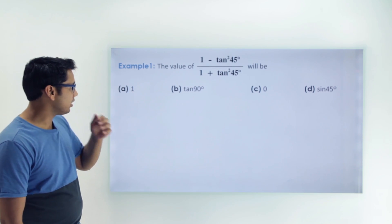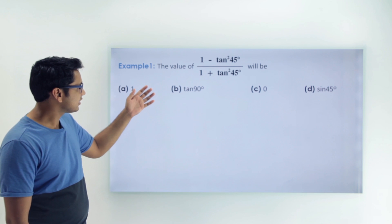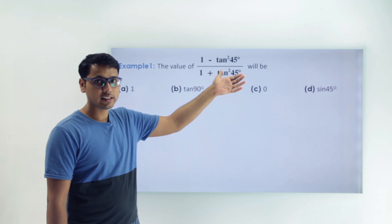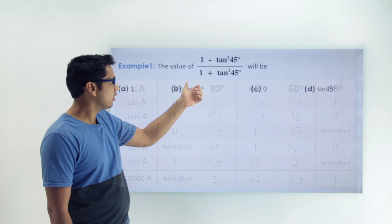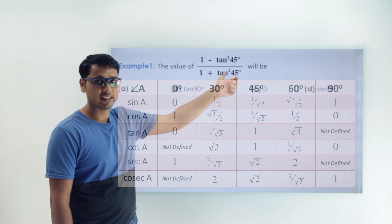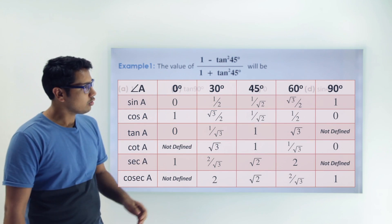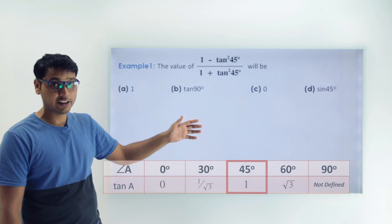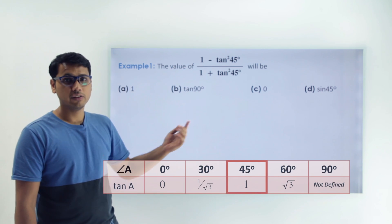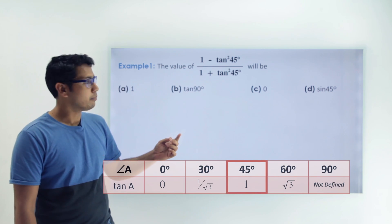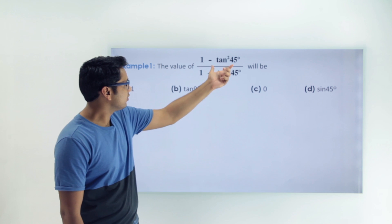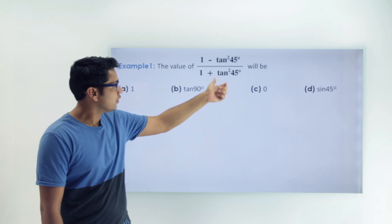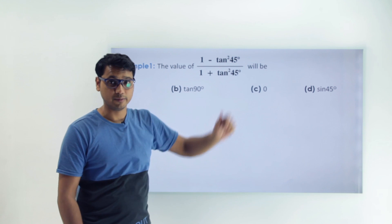Here is the first example. In this example we have to find the value of (1 minus tan squared 45) upon (1 plus tan squared 45). Looking at the table we know that the value of tan 45 is 1, but we need to understand what this term means.